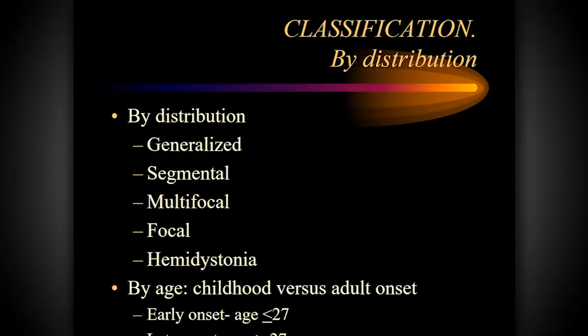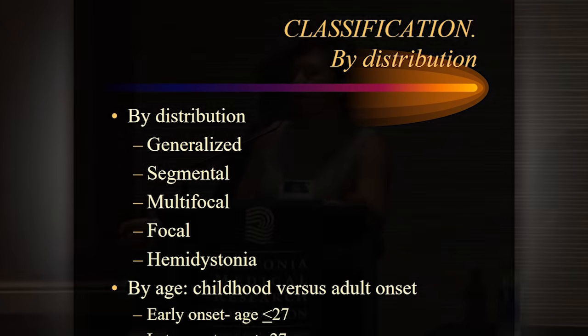The next descriptor is age of onset. An important cutoff is age 27 or younger versus above. This matters because cases of a particular type of generalized dystonia caused by the DYT1 genetic cause have not been described in young adults above age 27. This gives the physician a diagnostic clue about where to look and whether to pursue more focused or more generalized genetic ascertainment.